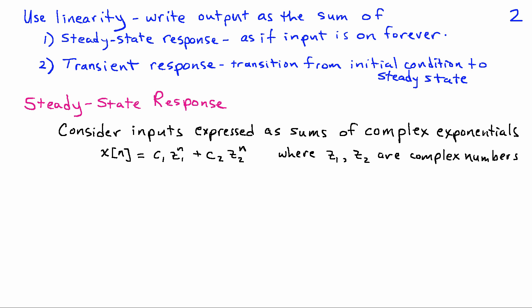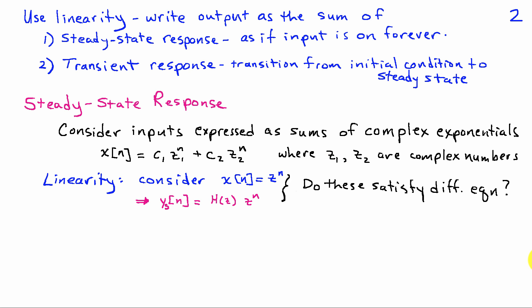For our analysis, we're going to consider inputs expressed as sums of complex exponentials. In other words, I'm going to assume my input can take the form c_1 z_1^n plus c_2 z_2^n, with more terms possible, where z_1 and z_2 are complex numbers. By allowing z_1 and z_2 to be arbitrary complex numbers, we can describe a wide variety of signals — for example, exponentially damped sinusoids, sinusoids, constants, and so on. Since the system is linear, we don't have to consider all the terms at once — we'll just consider one at a time, and I'm going to assume an input of the form z^n.